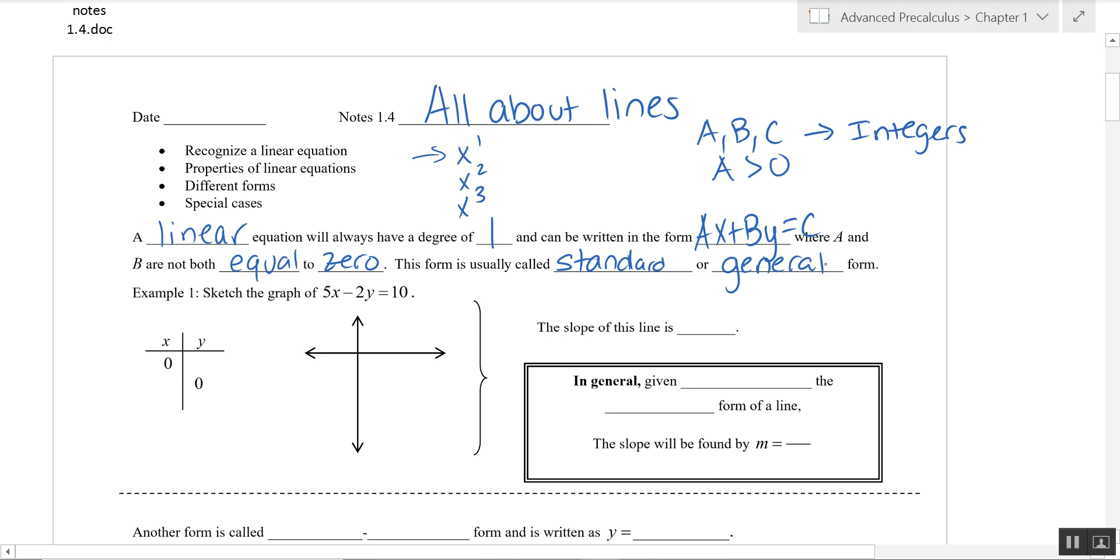If we're given it in that form, first example says sketch the graph of 5x minus 2y equals 10. Typically, the easiest way to graph something like this is to plot its intercepts. We're gonna find the y-intercept by letting x equal zero. Plug in zero for x, we get negative 2y equals 10 or y equals negative 5. Then if we plug in y equals zero, we get 5x equals 10 or x equals 2.